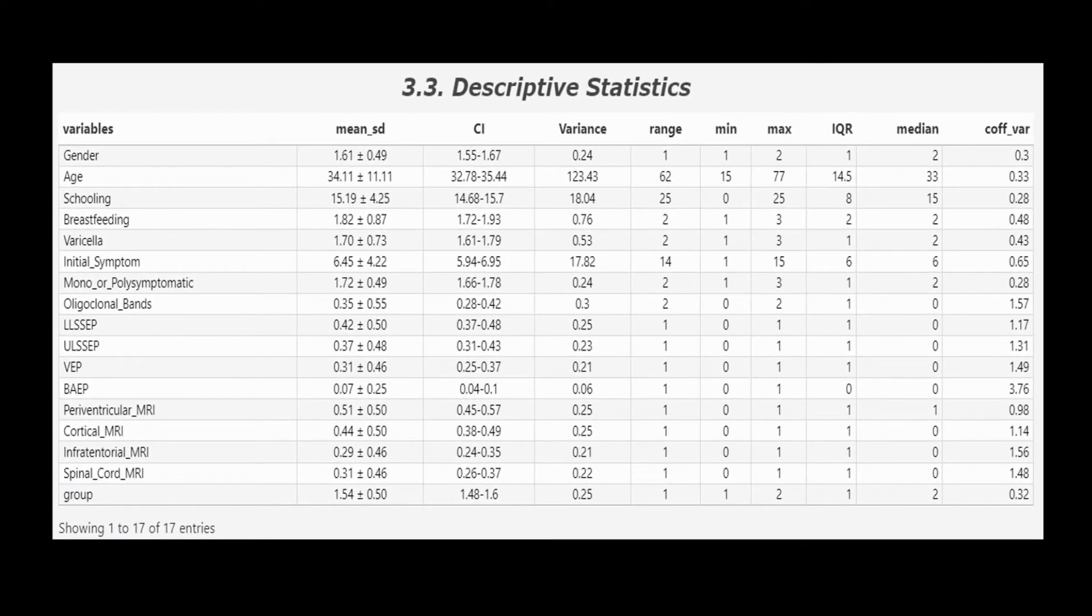Next table is on descriptive statistics for all numeric columns in the dataset. If you need some statistics for your article, like mean and standard deviation, you could directly take it from this document.